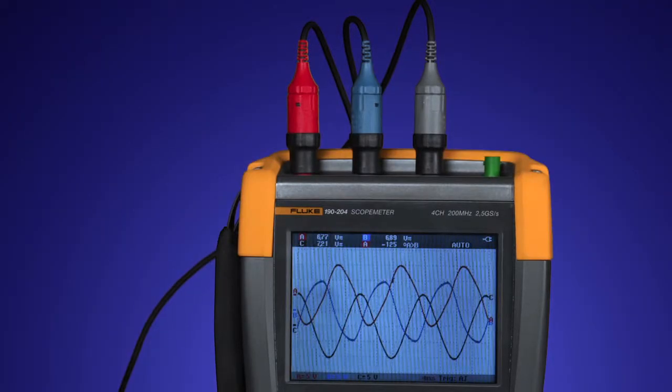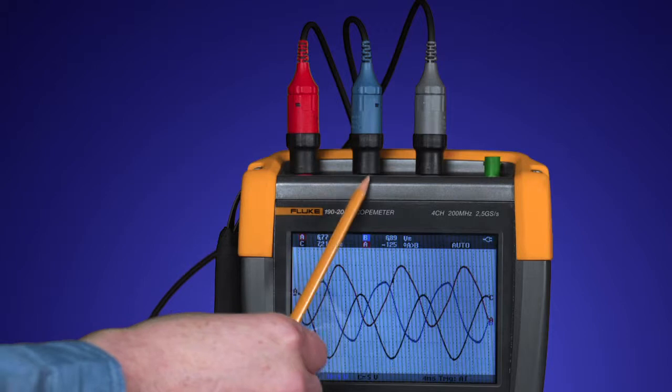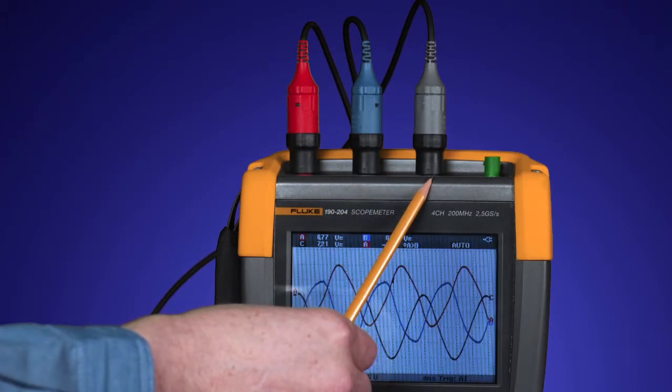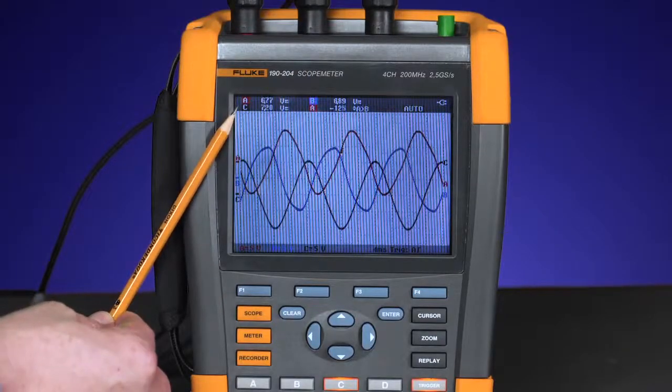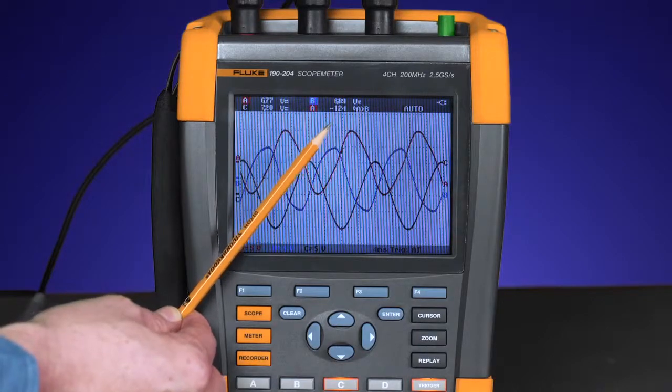We have our inputs set up with channel A measuring the amplitude of phase A, channel B measuring phase B, and channel C measuring phase C. Our defined measurements are the amplitude on each of the three phases and the fourth input reading the phase angle between input A and B.